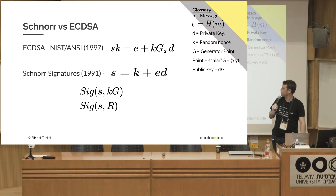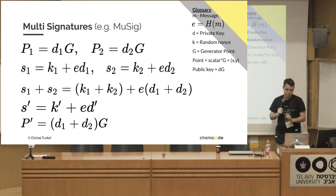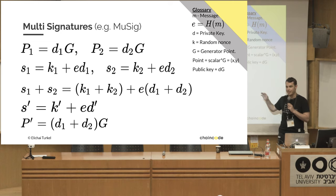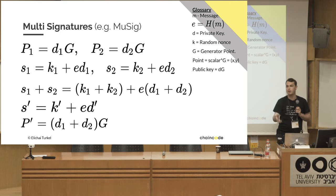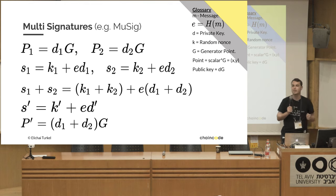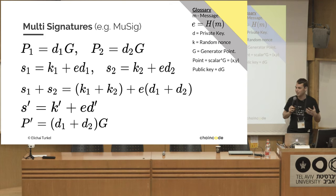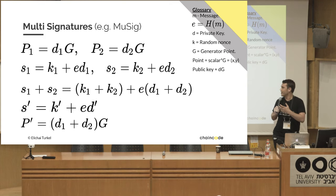Other than the security proof and the linearity, what's cool about Schnorr? Multisig. We can easily create a multisig. There are attacks against the naive multisig, and in practice we'll probably use something like MuSig, a paper by Andrew Poelstra and Peter Wuille. But I want to show you the naive multisig — it's not that far off from what we'll do in practice.